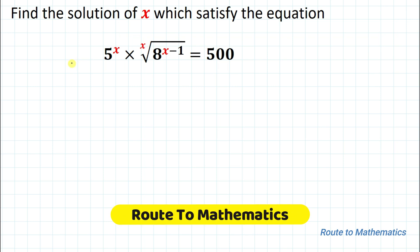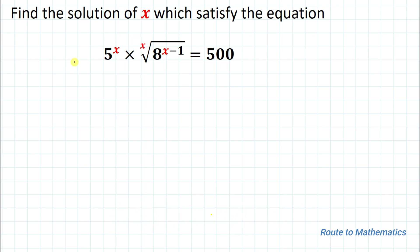Hello everyone, welcome to Root 2 Mathematics. In this video we are going to solve an interesting exponential equation. The given question is: find the solution of x which satisfies the equation 5 to the power x, multiplied by the x-th root of 8 to the power x minus 1, equals 500. We are asked to find the values of x from this given equation, so without any delay let's start the solution.